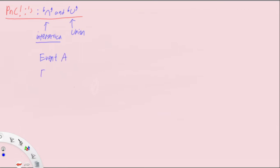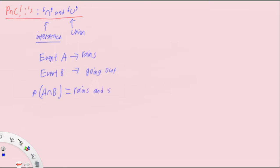For example, we have event A and event B. Let's say event A is 'it rains' and event B is 'going out.' Then A intersect B means both are happening at the same time — it rains and someone goes out. So let's say John goes out on a rainy day because, for some reason, he likes to go out when it's raining.